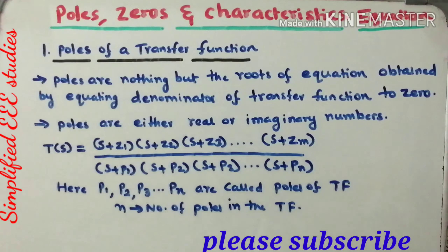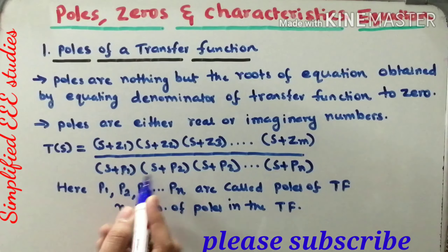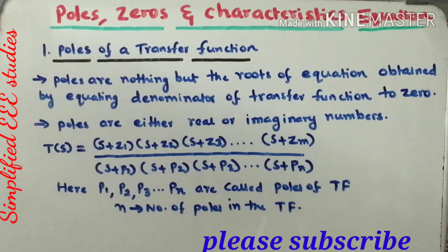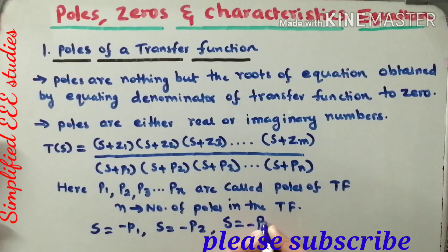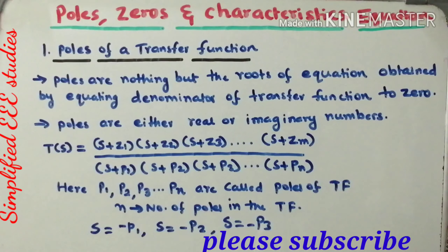Now, how to locate the poles? p1, p2, p3, ..., pn are called poles of the transfer function, and there are n number of poles available. To locate the poles, equate the denominator polynomial — (s + p1)(s + p2)(s + p3)...(s + pn) = 0 — so that you can identify the location. Whenever it is equated to zero, you get s = -p1, s = -p2, s = -p3, and likewise. You can identify whether poles are on the real axis or imaginary axis.